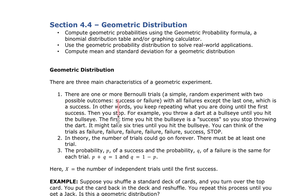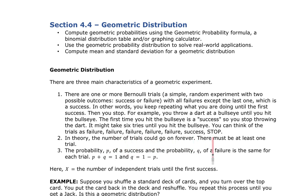There is one or more Bernoulli trials, which are basically a simple random experiment with two possible outcomes — success or failure — with all the failures except the last one, which is when you finally get success. You're keeping track of what you're doing until you get your first success and then you stop. For example, you throw a dart at a bullseye until you hit it. It may take five or six tries, but you keep going. You can think of trials as failure, failure, failure, failure, failure until you hit success and then you stop.